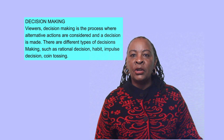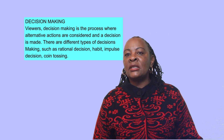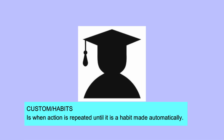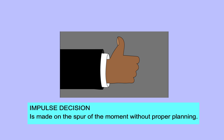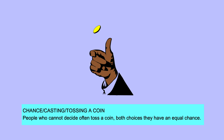Custom or habit is when an action is repeated until it becomes a habit, made automatically. An impulse decision is a decision made on the spur of the moment without proper planning. Chance, casting, or coin tossing is when people who cannot decide often toss a coin — both choices have an equal chance.